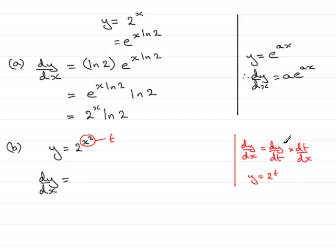And I need dy by dt. So dy by dt, by using the result up here, you can see that 2 to the power t, I'm making the x the t here, would result in 2 to the power t, natural log of 2. So that would be 2 to the power t, natural log of 2.